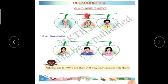Relationships. Who are they? You have to identify these people. Example they have given. He is grandfather. Now here who is she? She is grandmother. Right, here the spelling of grandmother: G-R-A-N-D, Grand, M-O-T-H-E-R, Mother. Grandmother.